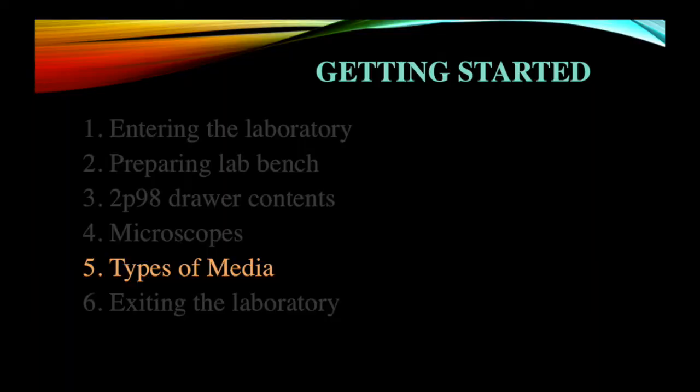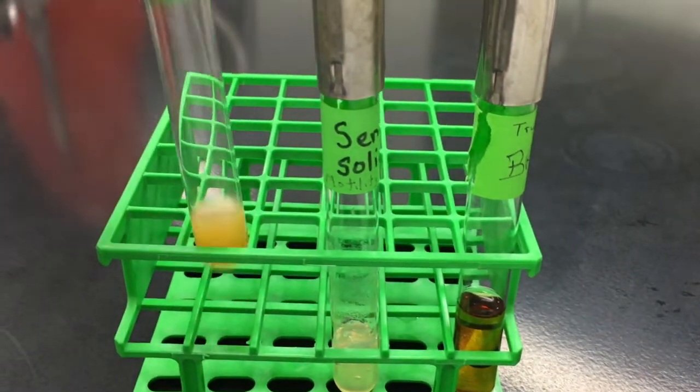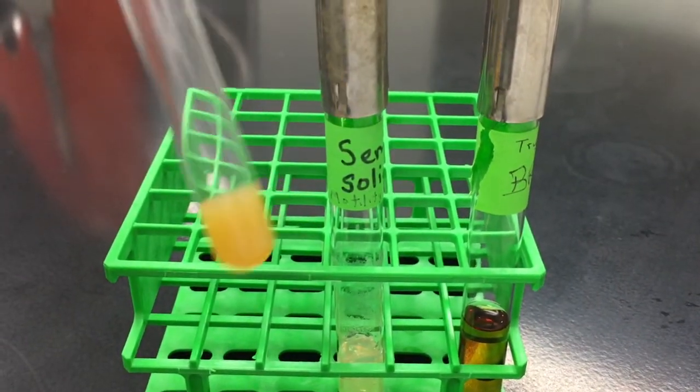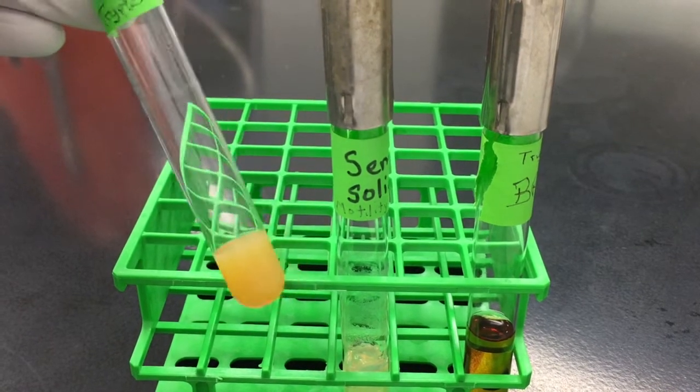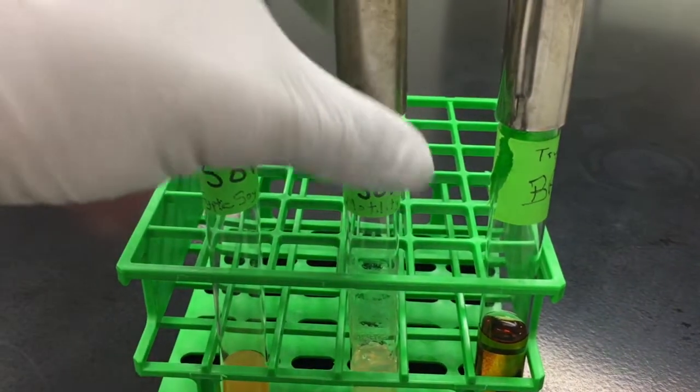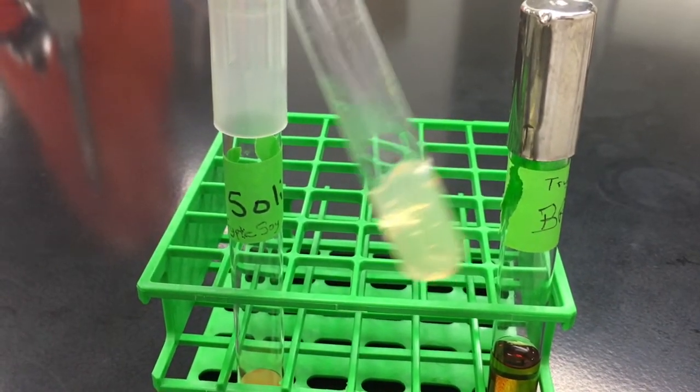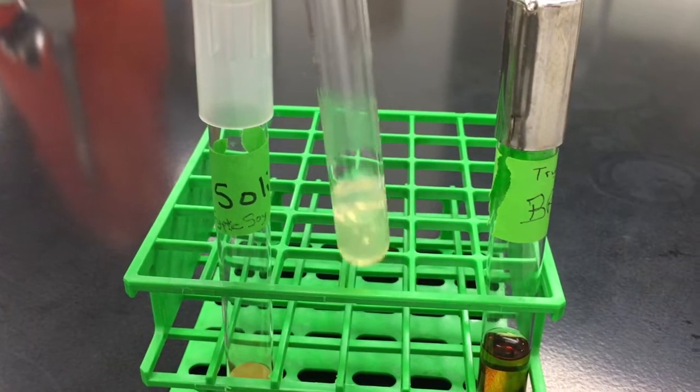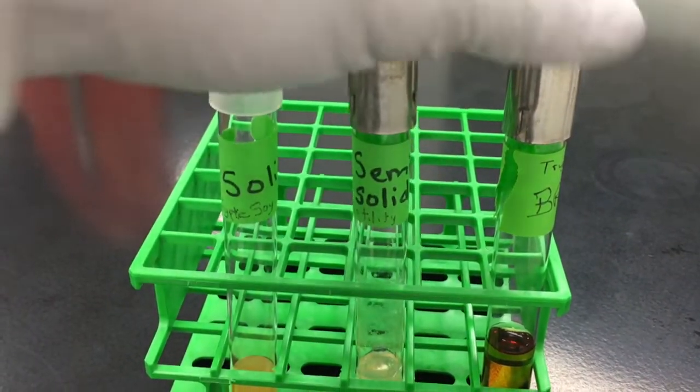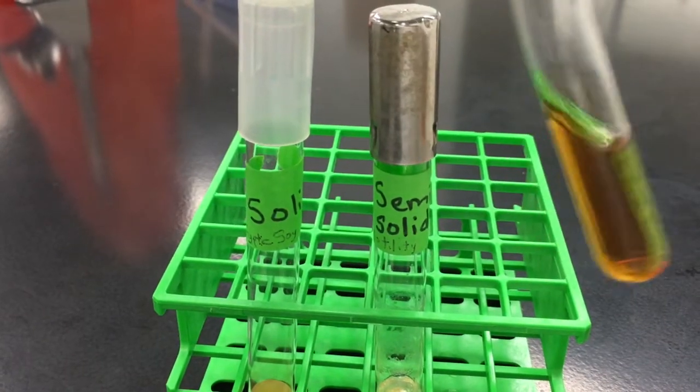You'll become familiar with several types of media in the laboratory. The majority of which will be a solid form of agar, which can be in test tubes as shown here or in petri dishes, that have about 1-1.5% agar added to make them solid. There are semi-solid found here, which have a lower percentage of agar added. And then there exists broth cultures that have no agar in them, so they're simply liquid.